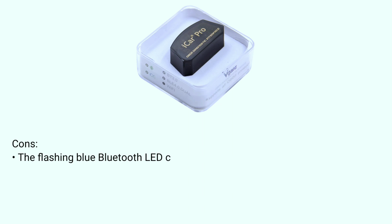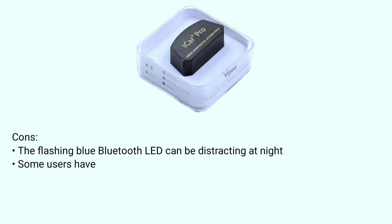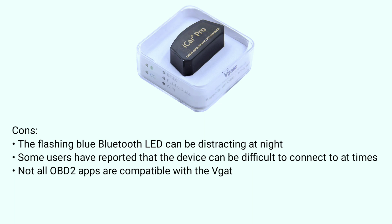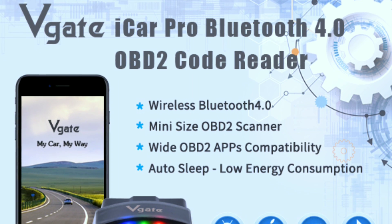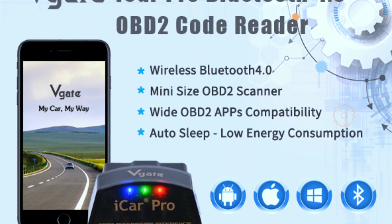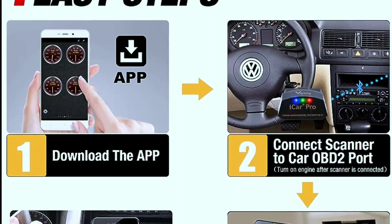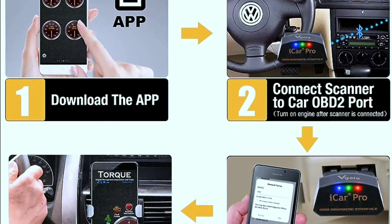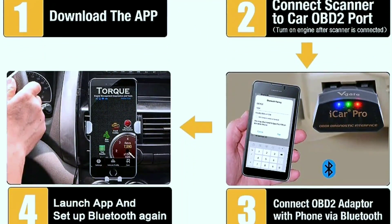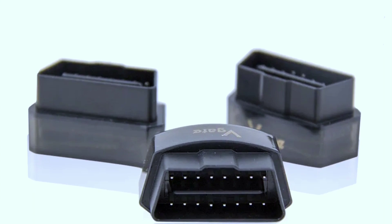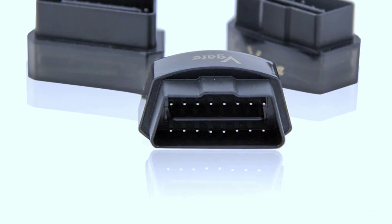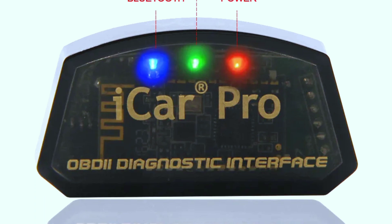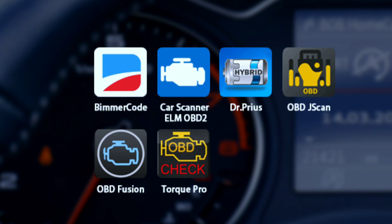Cons: the flashing blue Bluetooth LED can be distracting at night, some users have reported that the device can be difficult to connect to at times, and not all OBD-II apps are compatible with the Vagate eCar Pro Bluetooth 4.0. Overall, the Vagate eCar Pro Bluetooth 4.0 is a good value for the money. It is a reliable and easy-to-use OBD-II scanner compatible with a wide range of vehicles. However, users should be aware of the potential drawbacks such as the flashing blue LED and compatibility issues with some OBD-II apps.